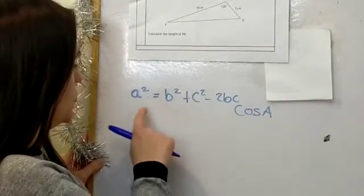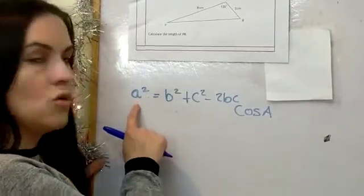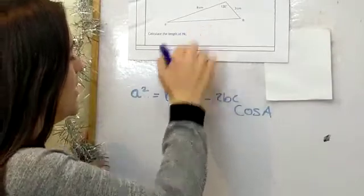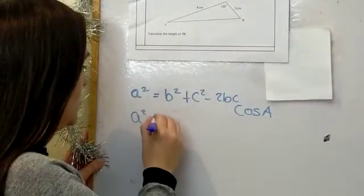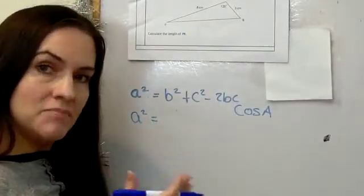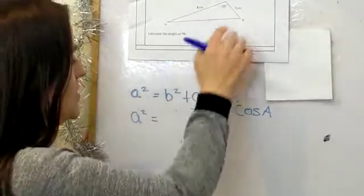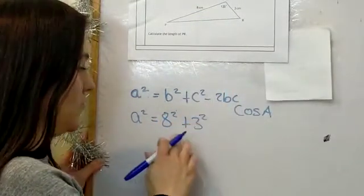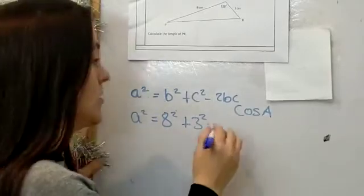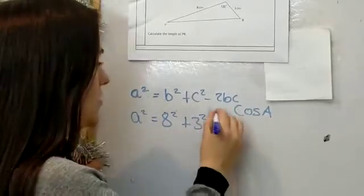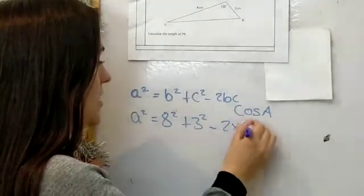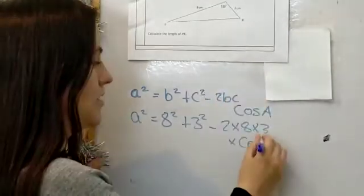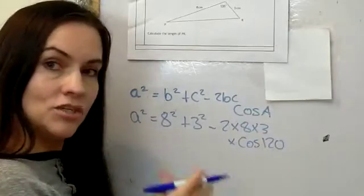The side we're trying to find we always call 'a', so a² equals b² + c². We can call the sides b and c, so it's 8² + 3² — it would also be fine to say 3² + 8² — take away 2 × 8 × 3 × cos 120.